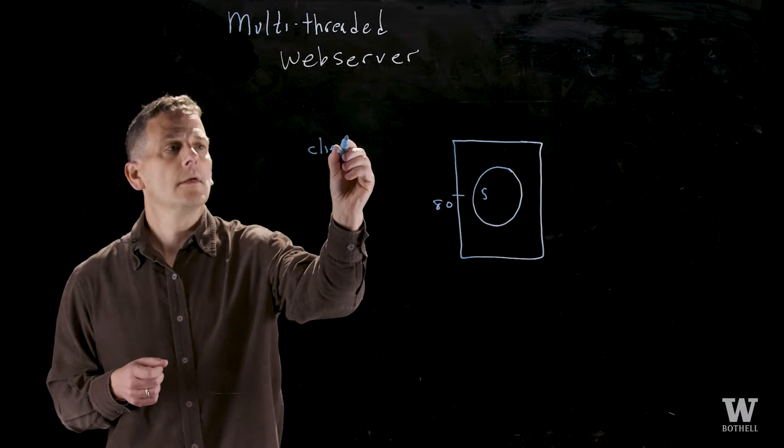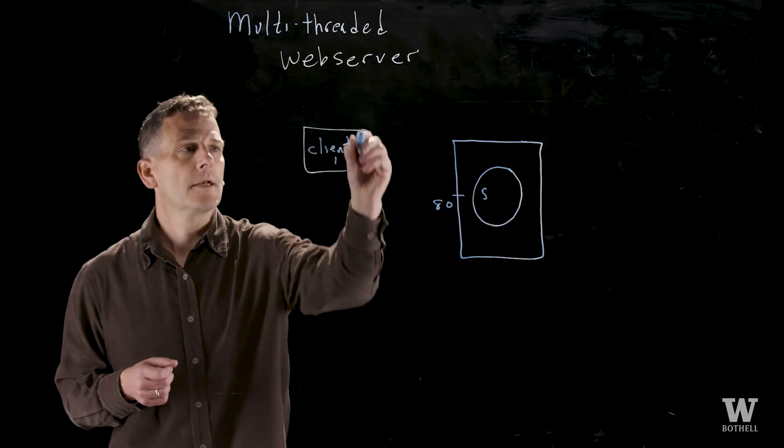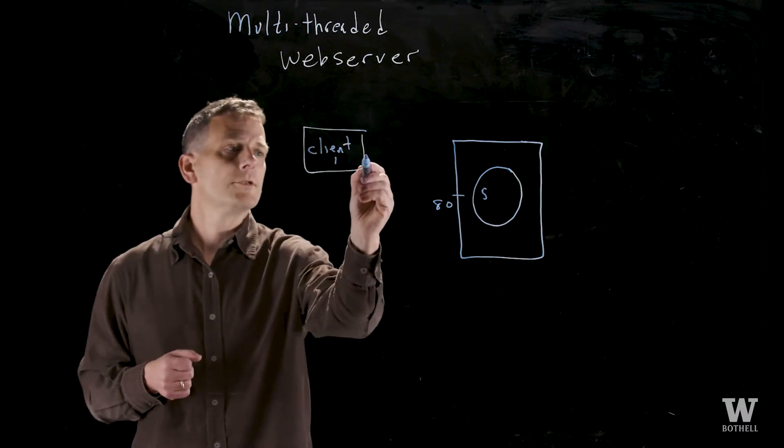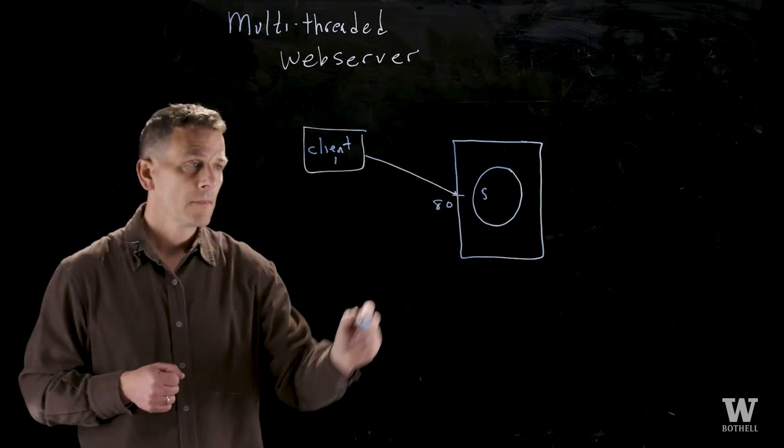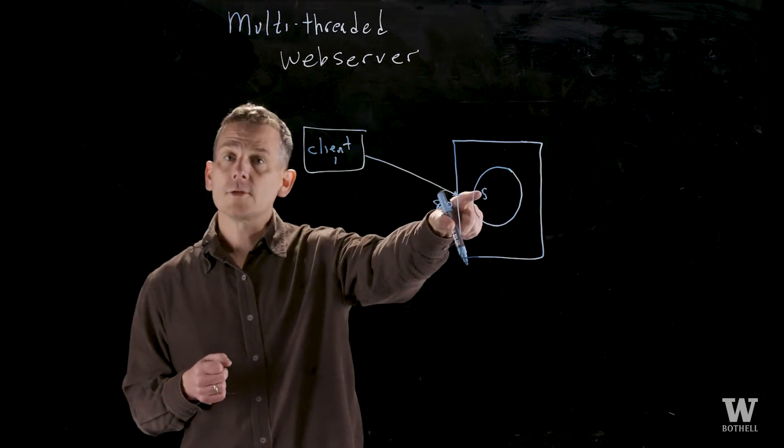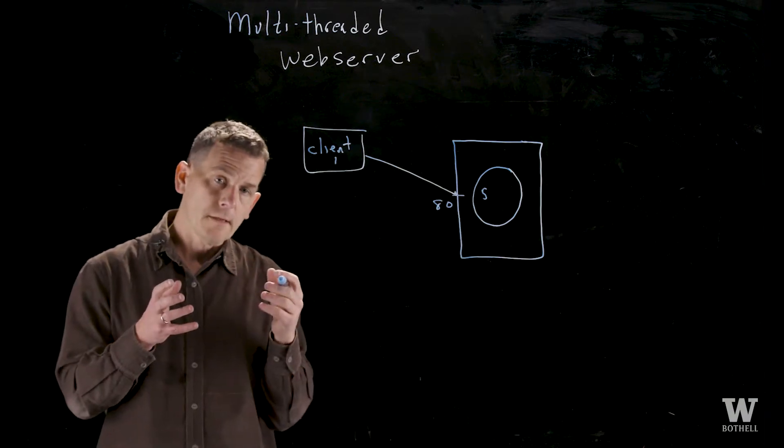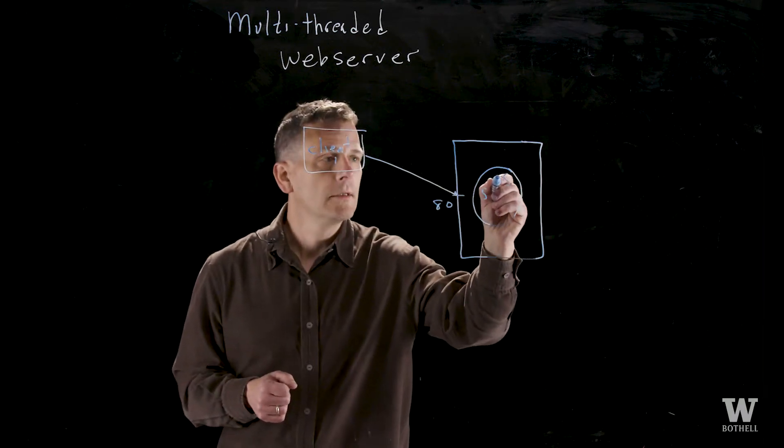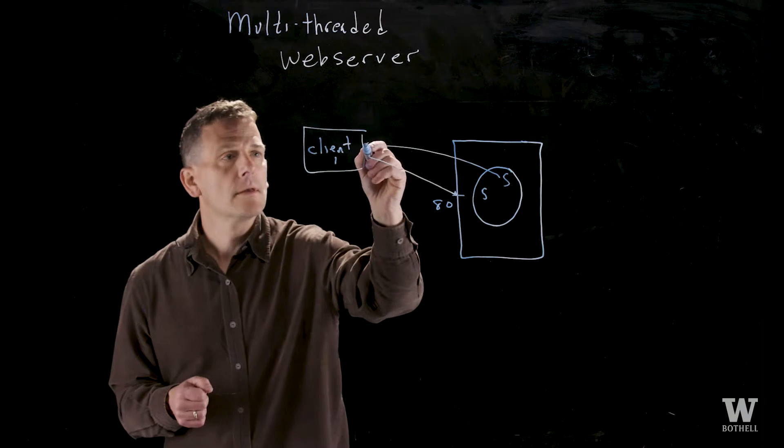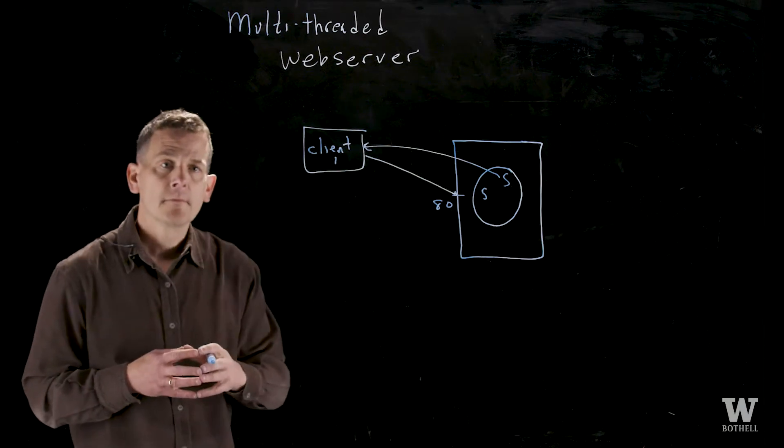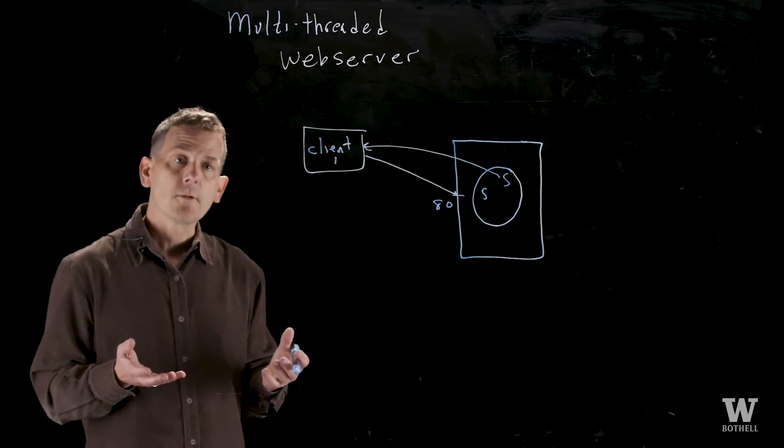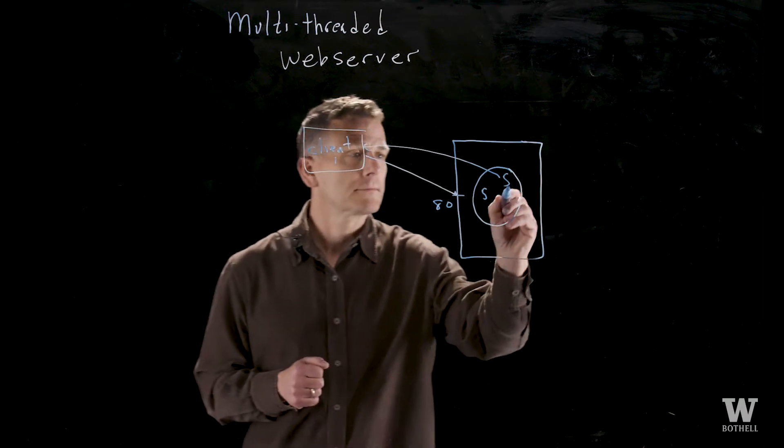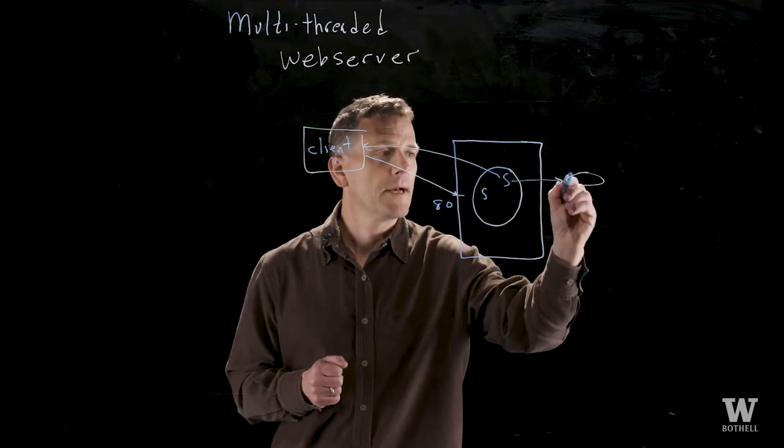Let's say this is you in your home on a client box and you connect to the web server. The dispatch thread will receive that connection and hand the socket back to a working thread, which will now be connected to your client. Let's say your web request required that thread to go back to a database. So maybe it'll make a call back here to some database.